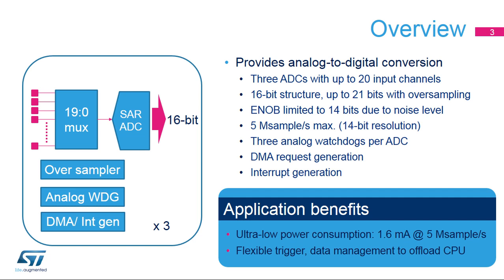There are up to 20 analog inputs available across the three ADCs. The ADC module itself is a 16-bit successive approximation converter with additional oversampling hardware. Due to the noise level, only 14-bit equivalent performance is achieved. To have more than 16-bit performance, it is necessary to use oversampling methodology. Under certain conditions, the oversampled output can have a 21-bit result.